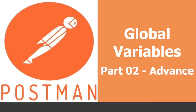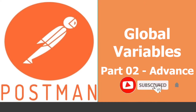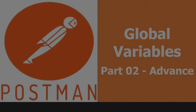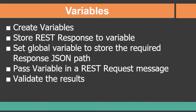Hi everyone, this is Ravi. Welcome back to Postman Beginners Tutorial. This is lesson 6 on global variables, basically a continuation of my previous lesson 5. In lesson 5, I taught you how to create variables at the collection level and how to use that variable while sending a request. Please do subscribe to the channel and click on the bell icon to receive notifications whenever I publish more videos.